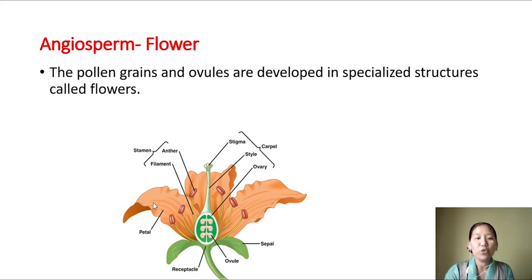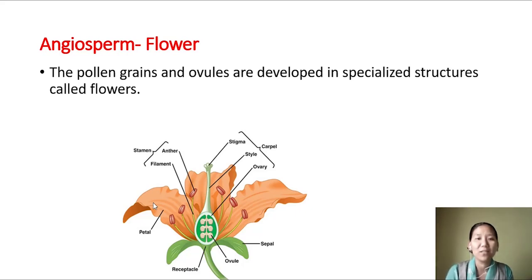Inner to the corolla we have the male part - the stamen - and the innermost one is the female part, that is the carpel or pistil. So there are four whorls present on the receptacle. The outer two are not directly involved in reproduction and are called accessory whorls, and the inner two are called reproductive whorls.